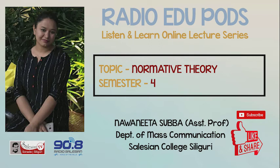The last of the normative theories is the democratic participant media theory. This theory emphasizes on the participation of the public even at the grassroots level in the communication process. It focuses on the participation of the public and not so much on the quality of the content. The theory talks about having diverse viewpoints and active citizen participation. Therefore, the consumer of mass media here becomes an active creator and not a passive consumer. Examples include citizen journalism, blogs, vlogs, etc. Nowadays, even the mainstream media has started taking citizen journalism seriously.